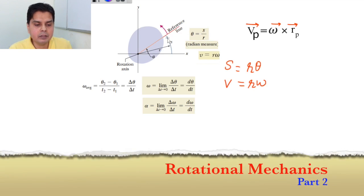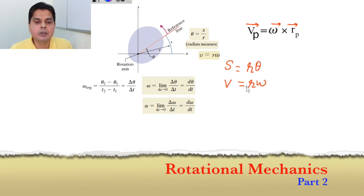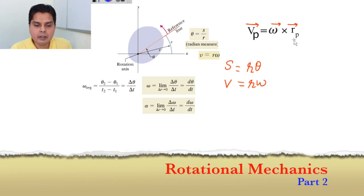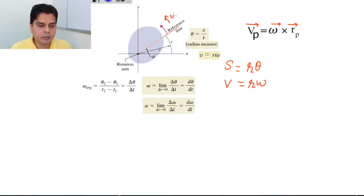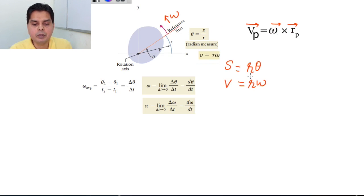We can write s = rθ. Differentiating, ds/dt = v = rω, which gives the magnitude of the tangential velocity. This is consistent with the vector equation vₚ = ω × rₚ, because ω is along the Z axis, and taking the cross product ω × rₚ gives v = rω.